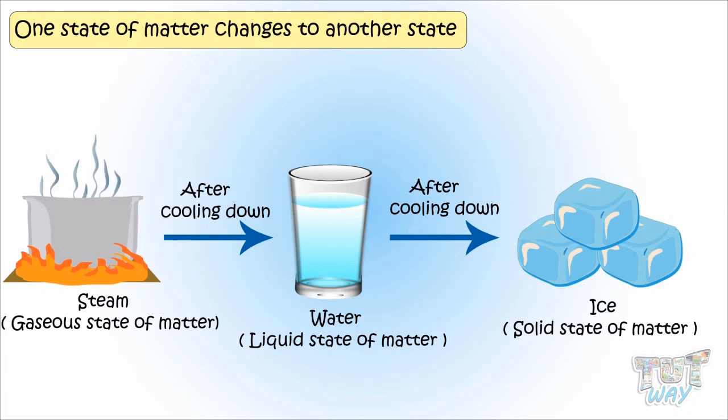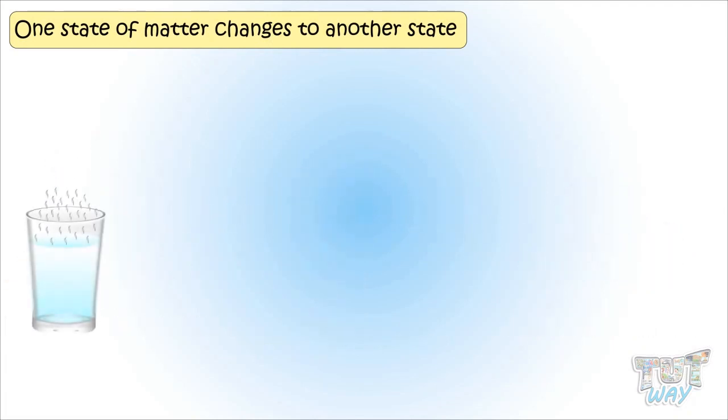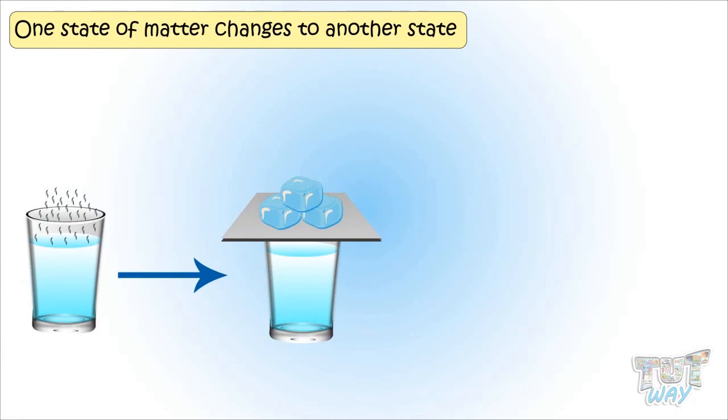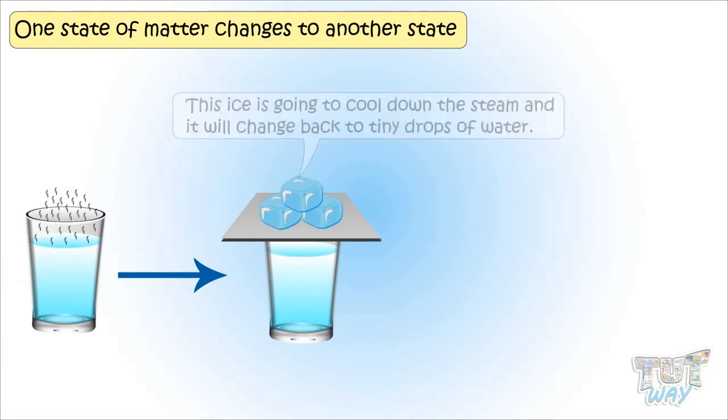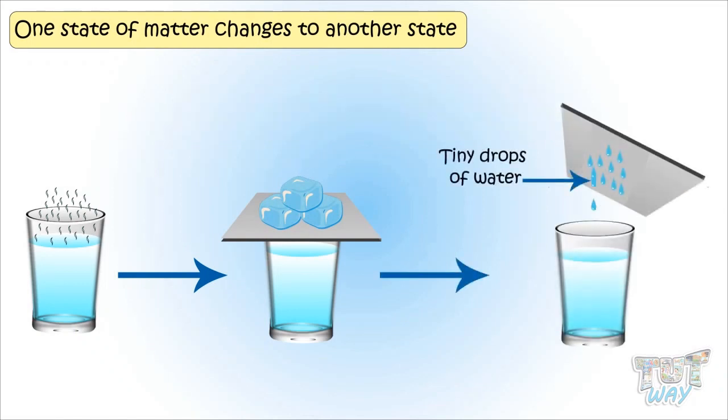Let's see it with an experiment. Take a glass of hot water from which steam is coming out. Now place a lid to cover it and put some ice on the lid. This ice will cool down the steam, and the steam changes back to tiny drops of water that you can see on the lid.